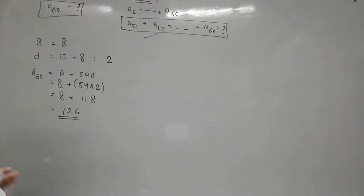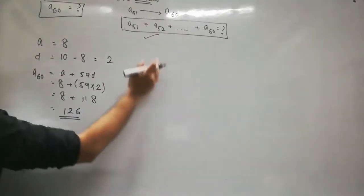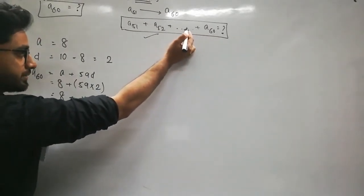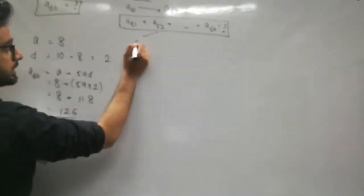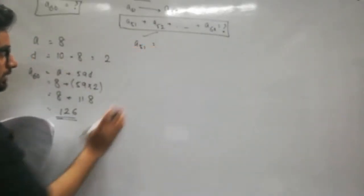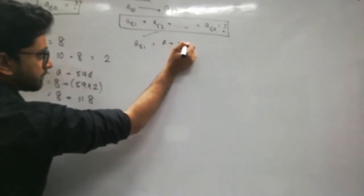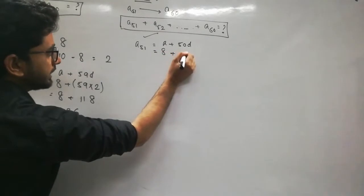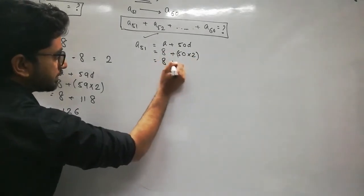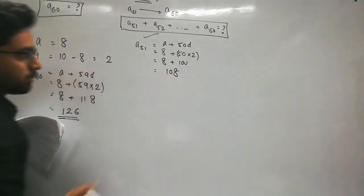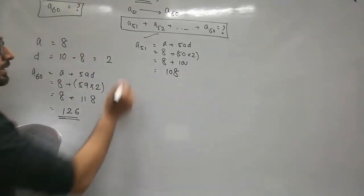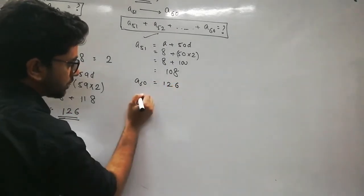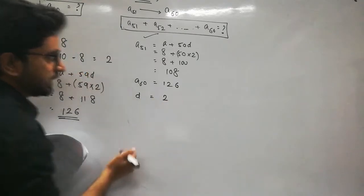Now find the sum of the last 10 terms: A60 + A59 + A58 + ... + A51. For this we find A51 first. A51 = a + 50d = 8 + 50×2 = 8 + 100 = 108.